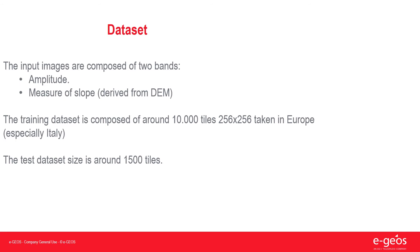The input images in the dataset are composed of two bands: amplitude and a measure of slope, which is derived from them. The training dataset is composed of around 10,000 tiles of 256×256 pixels, two bands, taken in Europe and especially in Italy. The test set size is around 1,500 tiles.